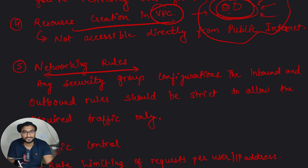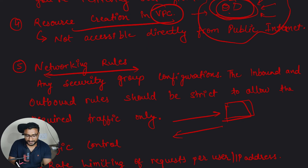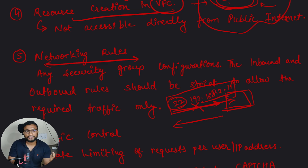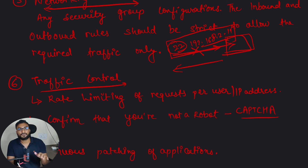Moving to networking rules: for any resource you create, you set inbound and outbound rules. Inbound rules define what kind of traffic can hit your server; outbound rules define what traffic your server can access. For example, you can allow only a specific IP, such as 192.168.x.x, on port 22. Any request from a different IP will be completely rejected. This way you can maintain networking rules to ensure only intended traffic reaches your servers.